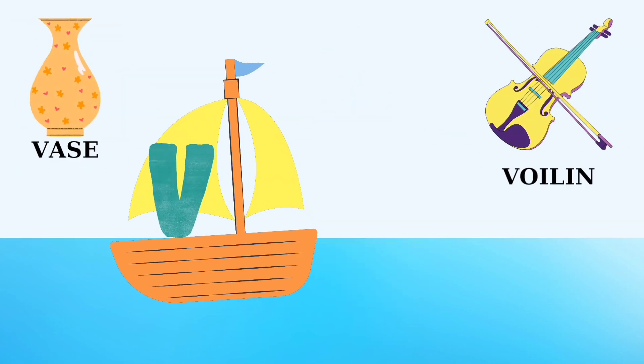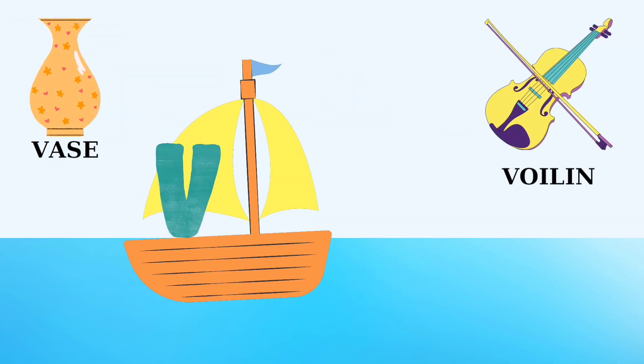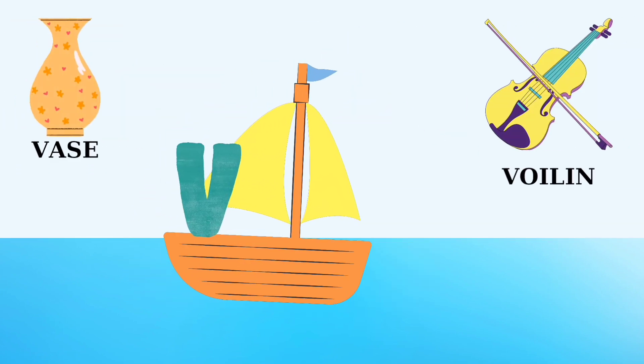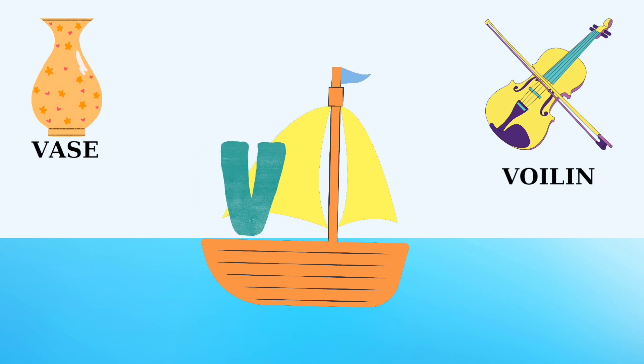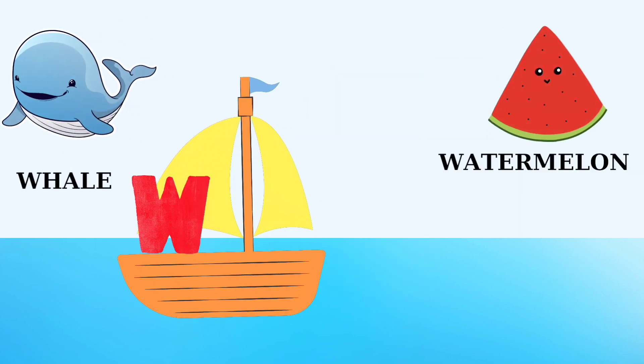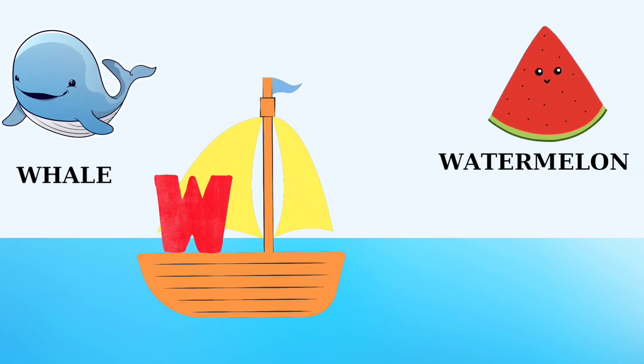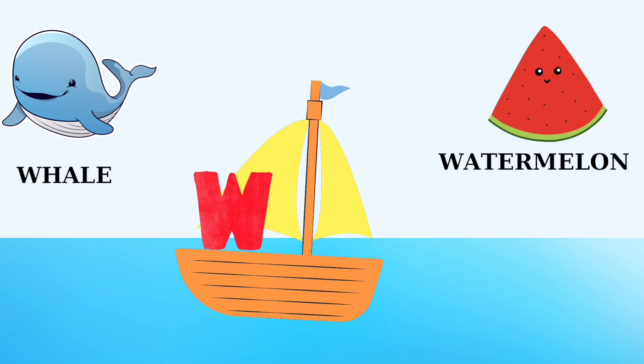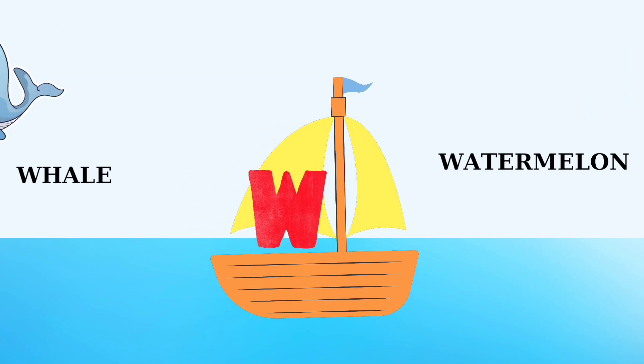V is for vase, V is for violin. W is for whale, W is for watermelon.